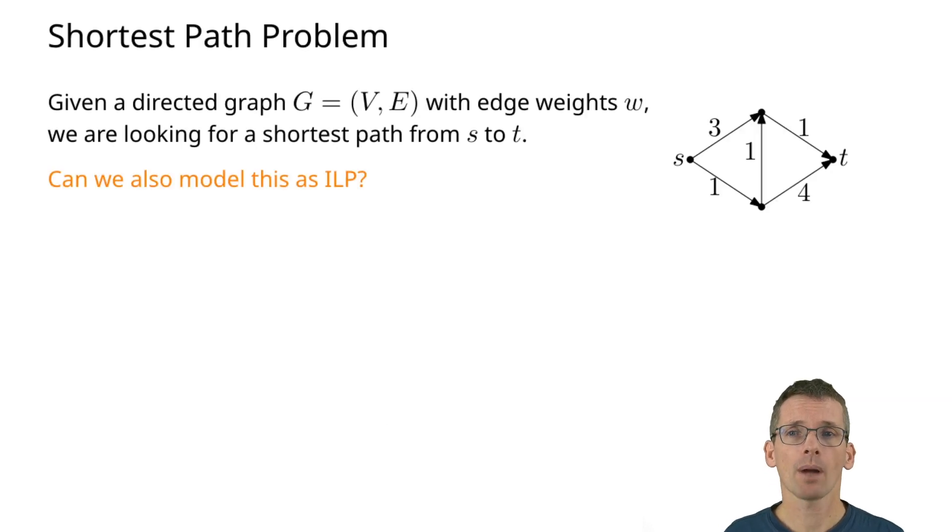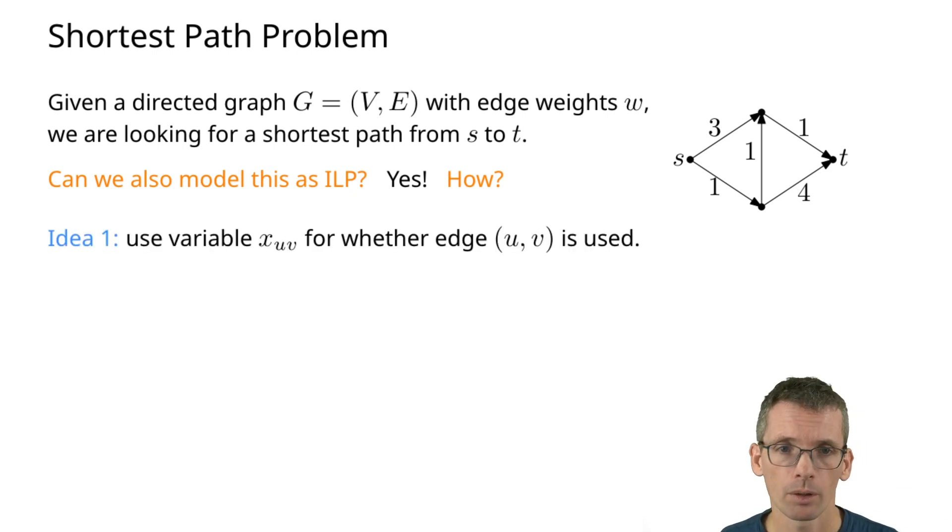The shortest path problem: we have a directed graph with edge weights and we're looking for the shortest path from a vertex s to a vertex t. So here's my s, here's my t. How can I model this as an ILP? What would be a natural choice of variables, objects that we might want to select? On a path we will select edges, so it's natural to have variables for each edge. We will have variables for every edge u,v and those will tell us whether we're going to use that edge or not.